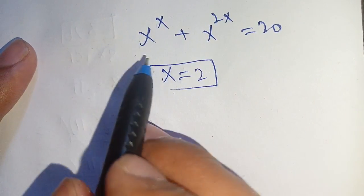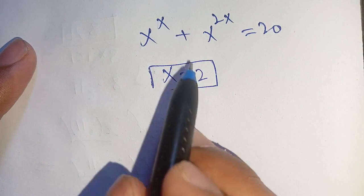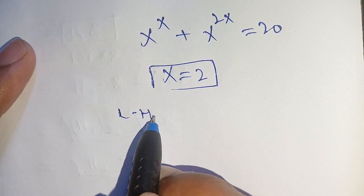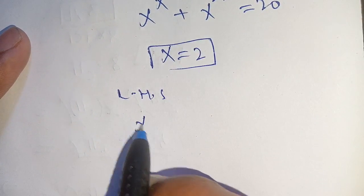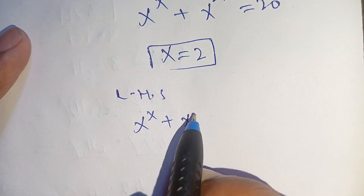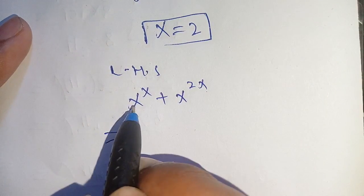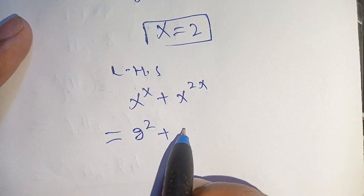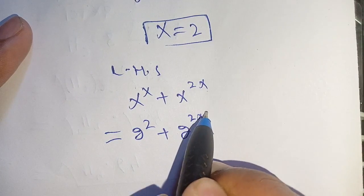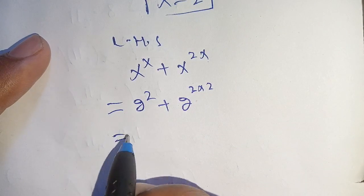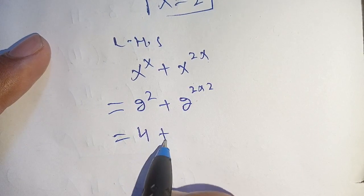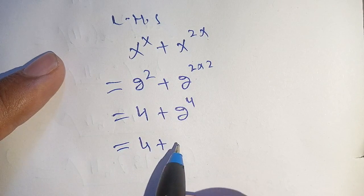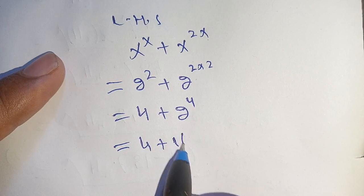Our final step is to verify whether x is equal to 2 satisfies our equation or not. Taking the left-hand side, we get x power x plus x power 2x, and putting x equal to 2 we get 2 power 2 plus 2 power (2 times 2). We get 2 power 2, which becomes 4, plus 2 power 4, which becomes 16.